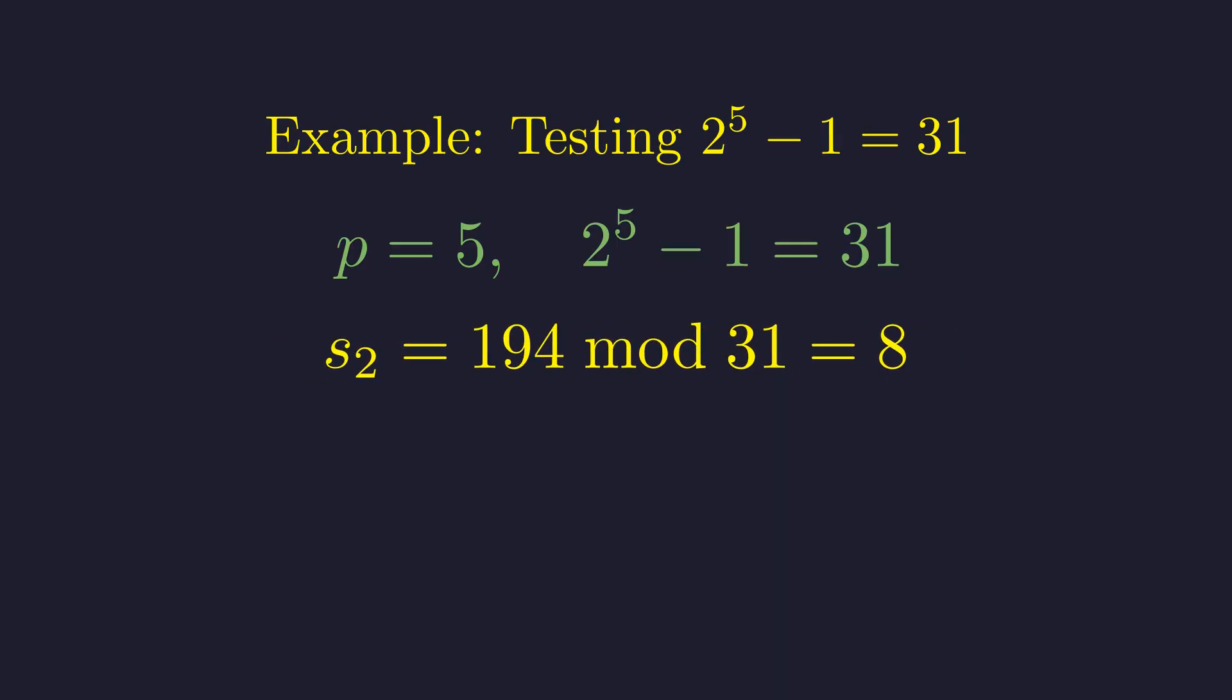Finally, we square 8 and subtract 2. Step 3, s equals 8 squared minus 2 equals 62. Reducing modulo 31, 62 modulo 31 equals 0.